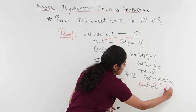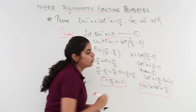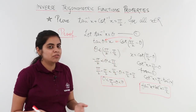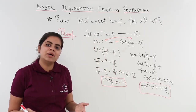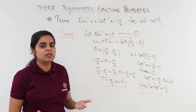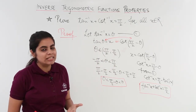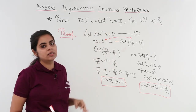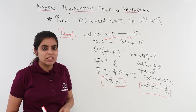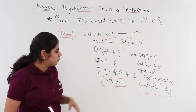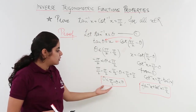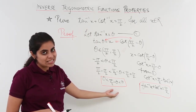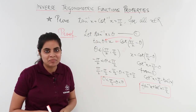This is the final step — we wanted to prove it, and we have proved it. The video is very similar to the previous one; it is just that we are proving tan inverse x plus cot inverse x is equal to pi by 2, and the interval of pi by 2 minus theta is 0 to pi.